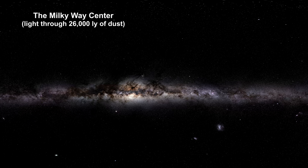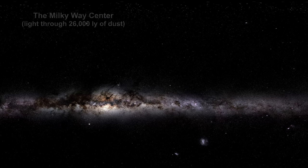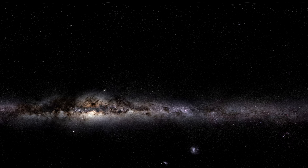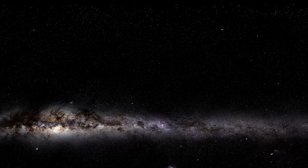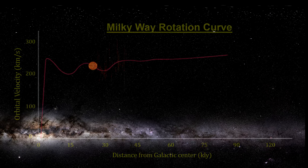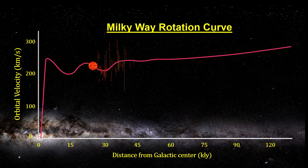Interstellar dust in our galaxy is critically important for calculating intrinsic star luminosity to get its distance. Dust is also what enables star formation by acting as a catalyst for producing molecular gas. And dust is the only galaxy content that we can use to accurately calculate the galaxy's rotation curve — that's star velocities at different distances from the galactic center. The Milky Way's rotation curve is one of the reasons scientists proposed the existence of dark matter.